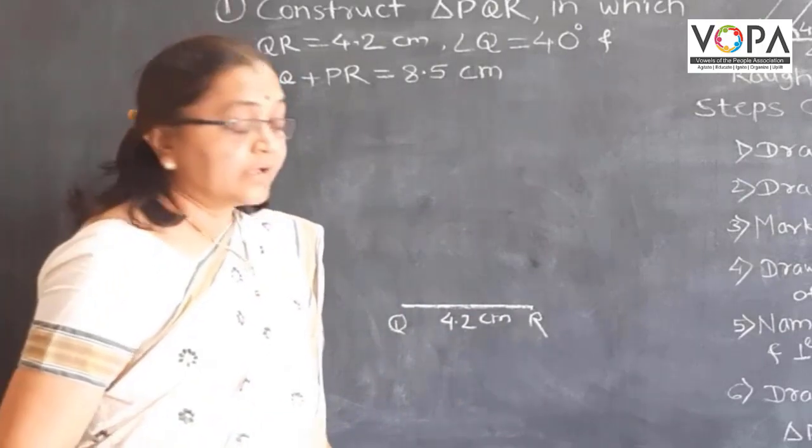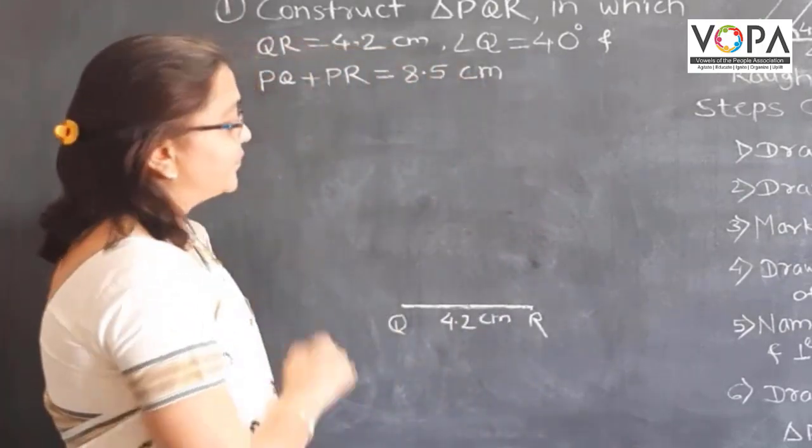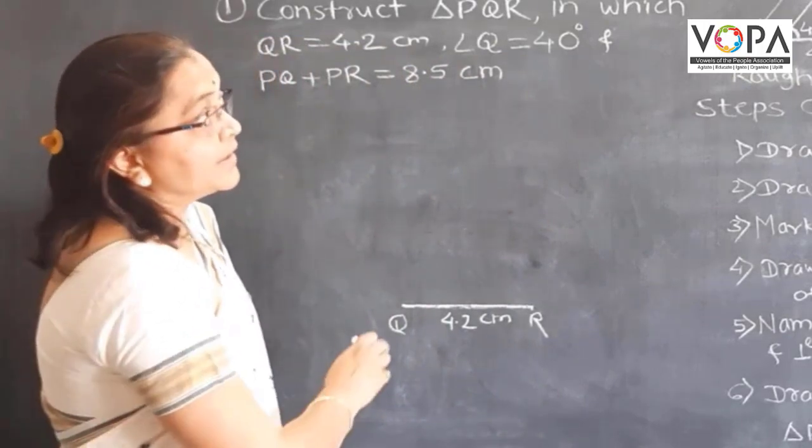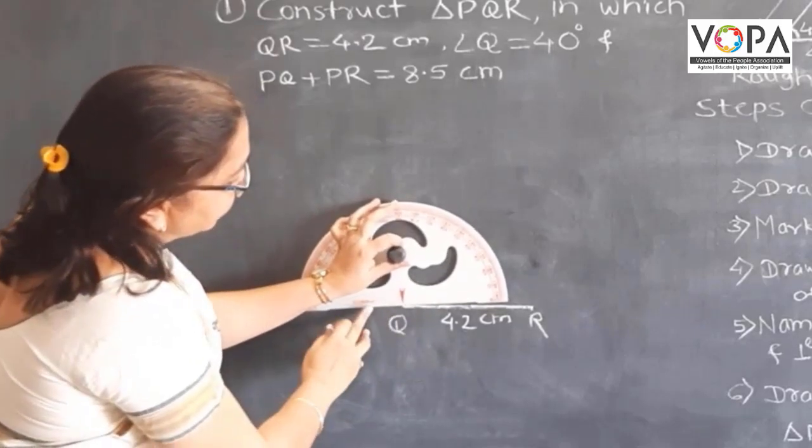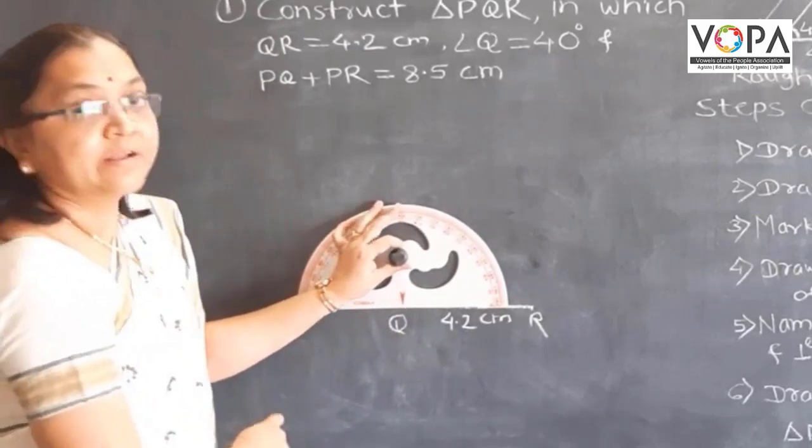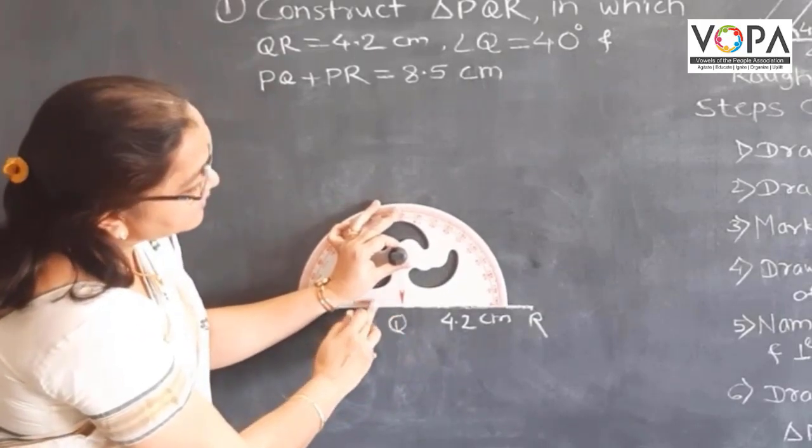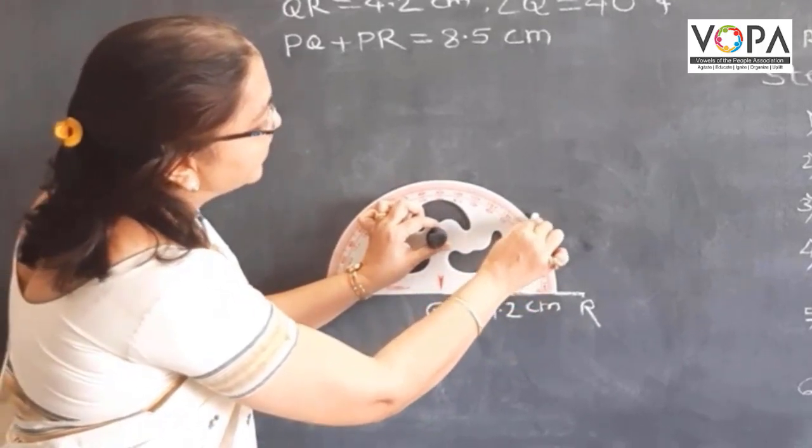Then the next step is to draw the angle Q. That is, draw ray QD. For that, add this protractor like this. Here is the 40 degree angle Q.